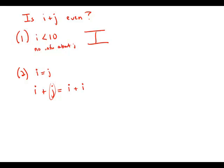Well, i plus i is 2i, and two times anything is even. So this means that if we know that i and j are equal, then we can definitively answer the question, is i plus j even? And so this is sufficient information.